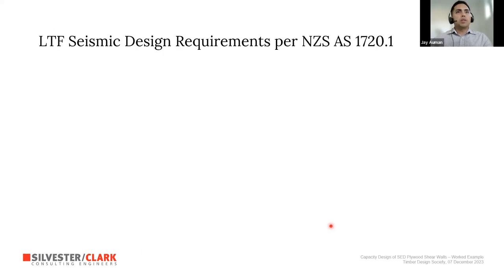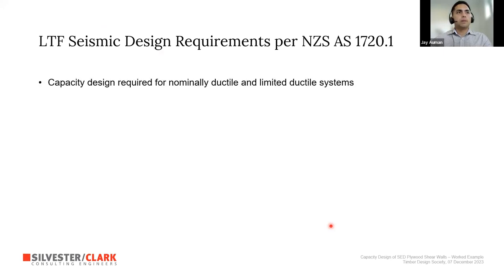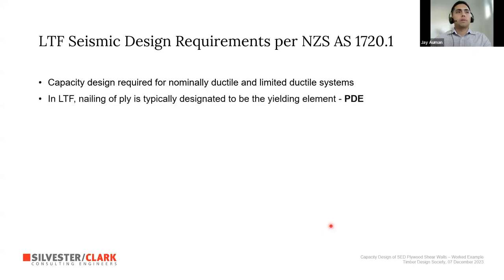NZS 1720 requires capacity design for nominally ductile and limited ductile systems, allowing ductilities of up to three. Higher ductilities require an alternative solution or special study. For light timber framing specifically, nailing of the ply is designated as the yielding element — it provides all the ductility, with all inelastic deformation concentrated within the nailing.